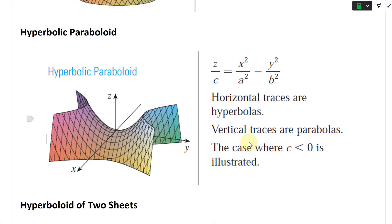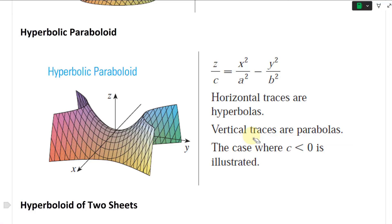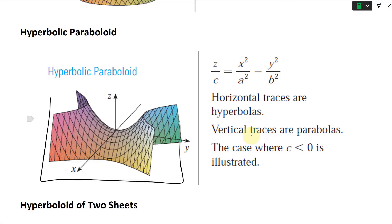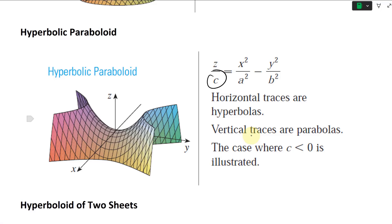For the hyperbolic paraboloid: horizontal traces are hyperbolas, and vertical traces are parabolas. If you cut it vertically in one direction, the parabolas go up; if you cut it from the other side, those parabolas go down. So depending on where you cut, the parabolas open upward or downward. The case where c is less than zero is illustrated here — if c were greater than zero, the shape would be inverted.